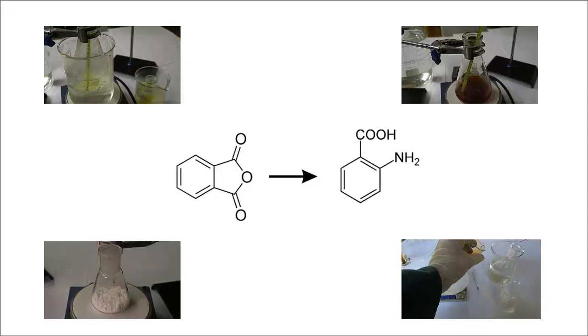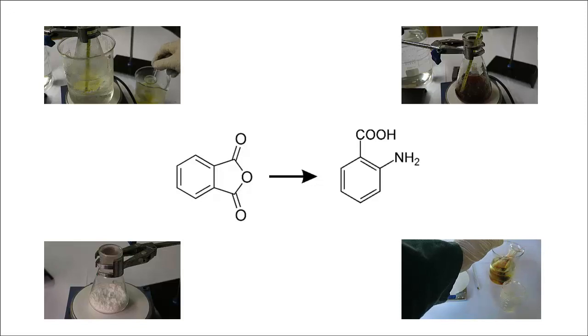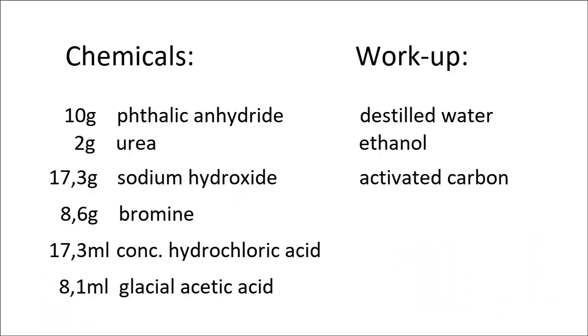I want to use it to react later with methanol, which produces methyl anthranilate, an ester which smells like grapes. The first step in the synthesis is the preparation of phthalamide, which will be then converted into anthranilic acid.